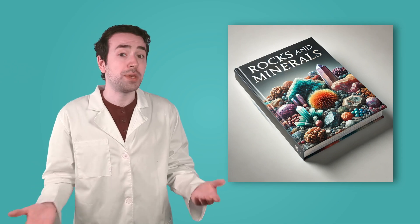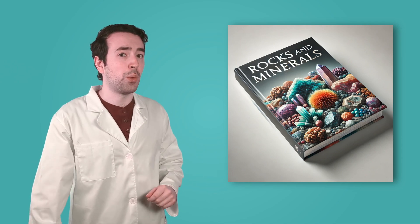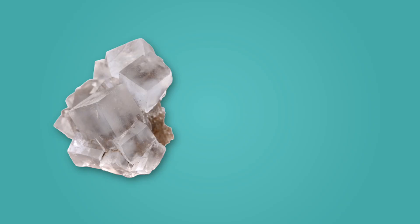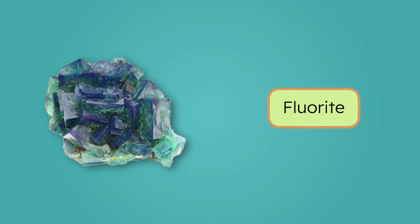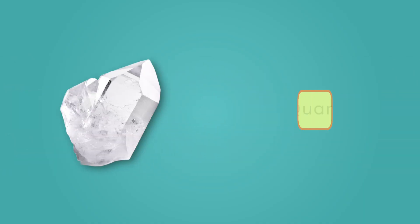We have a lot of information about these minerals now. By comparing their properties to a reference tool, like a book, a chart, or even a website, I bet we can figure out what they are. This very soft, glassy, white mineral is halite, also known as rock salt. The second mineral with its bright colors, white streak, and medium hardness is fluorite — it's used in things like toothpaste and fluorescent lights. Finally, this hard, glassy mineral is quartz. Quartz is super strong, which is why it's used to make glass, electronics, and even watches.